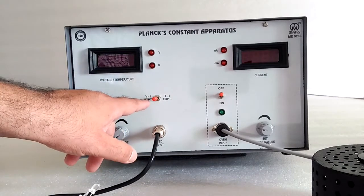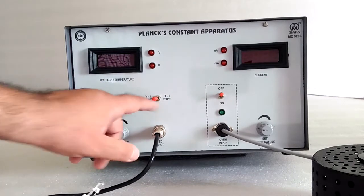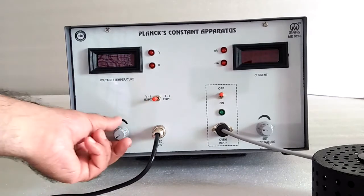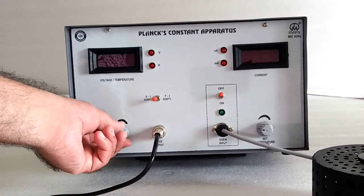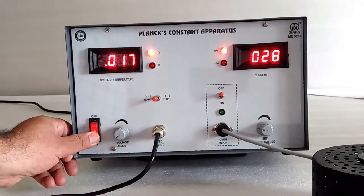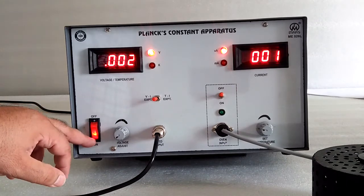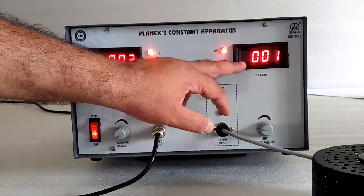Put the toggle switch in VI position. Switch on the instrument. This voltage should be at minimum. Switch on the supply. Here is the voltage and here is the current.